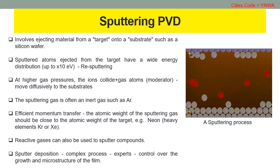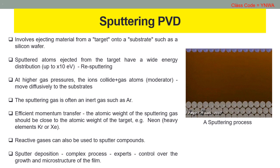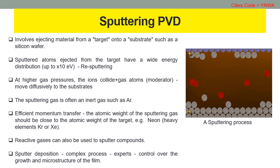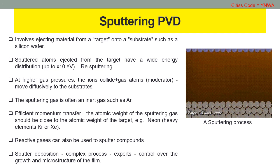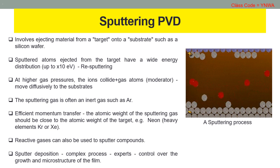Alternatively, at higher gas pressures, the ions collide with the gas atoms that act as a moderator, and move diffusively, reaching the substrates or vacuum chamber wall, and condensing after undergoing a random walk. The entire range from high-energy ballistic impact to low-energy thermalized motion is accessible by changing the background gas pressure. The sputtering gas is often an inert gas such as argon.